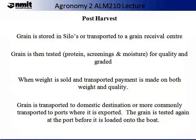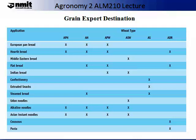Once grain is harvested, there is a whole system of grain handling that occurs after harvest. Grain tends to be initially stored in silos or transported to a grain receival centre. There are many grain receival centres around Australia's wheat belt. Grain is then tested for quality components such as protein, screenings and moisture, and then the grain is graded. When the wheat is sold, it is transported and payment is made by both quality and weight. Grain is transported to a domestic destination or more commonly to ports where it is exported, and tested again at the port before it is loaded onto the boat. The following table summarises grain export destinations for Australian wheat.